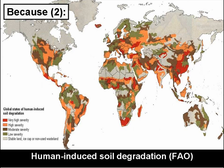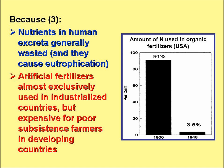Secondly, because as shown in the slide, there is a lot of human-induced soil degradation in many parts of the world, and this situation is getting worse, not better, year on year. And thirdly, because we generally waste the nutrients in our excreta, and they can cause severe environmental problems, for example eutrophication.